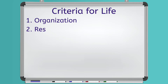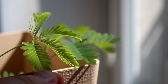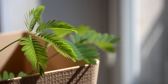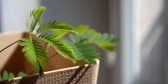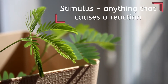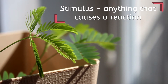The second criteria for life is responding to stimuli. This is shared from the lowliest single-celled organisms to the most complex multicellular — all living things respond to stimuli in one way or another. For example, the leaves of the Mimosa pudica plant fold up in response to even the lightest touch. A stimulus, by the way, is anything that causes a reaction. Different living things have different ways to respond to stimuli, but they all do it.